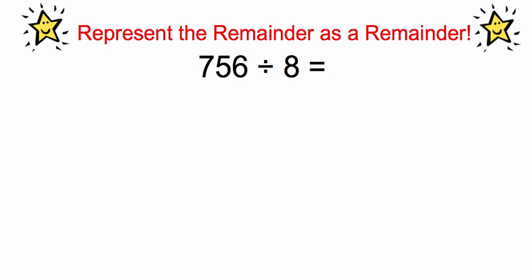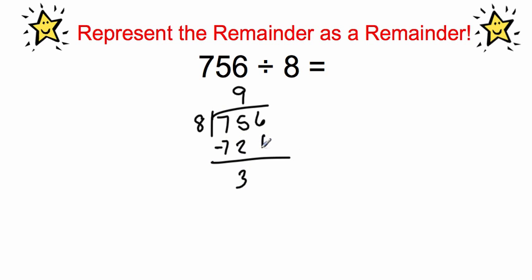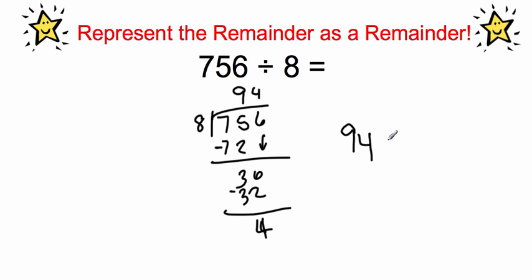The first way to represent the remainder is as a remainder, and you're already familiar with this. So we set up the problem: 8 goes into 75 nine times. 9 times 8 is 72. Subtract that out, we get 3. Bring down our 6. 8 goes into 36 four times, giving us 32. Subtract out and we get a remainder of 4. It's smaller than the divisor, so our answer would be 94 remainder 4.